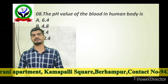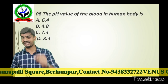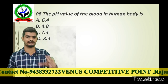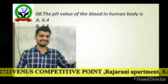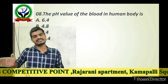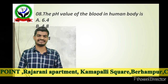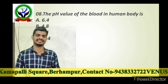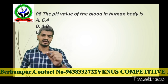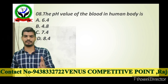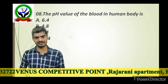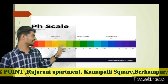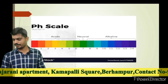Next question: the pH value of blood in the human body — is it less than 7 (acid), greater than 7 (base), or equal to 7 (neutral)? The pH of human blood is 7.4, which is slightly basic — a mild base.